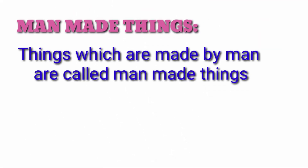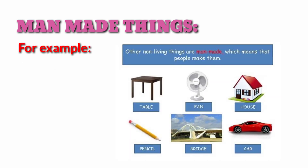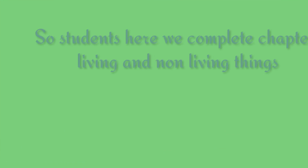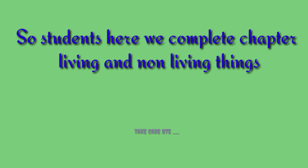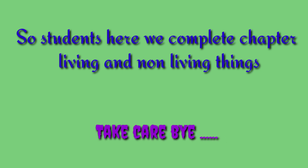Now let's move to the next topic — man-made things. The things which are made by man are called man-made things. For example, table, fan, house, pencil, bridge, car — all these things are made by people, and so they are called man-made things. Remember one thing: all these man-made things are non-living things. Here we complete the chapter Living Things and Non-Living Things.